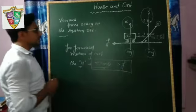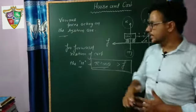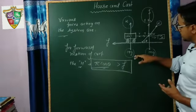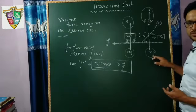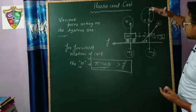So this is the condition in which the cart moves forward. We can easily see how many forces are acting here. These two forces are the weights of the cart and horse respectively. These are balanced by these normal reactions.